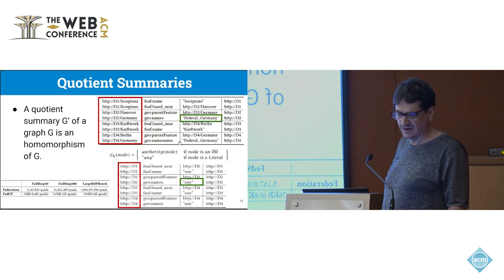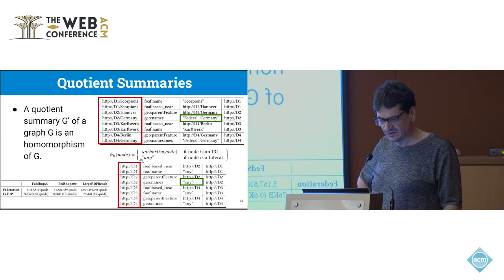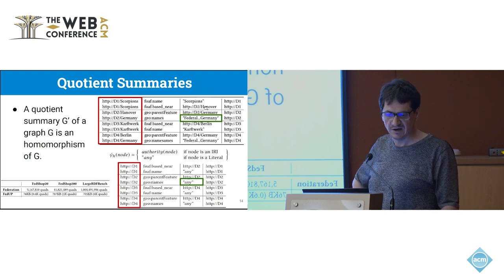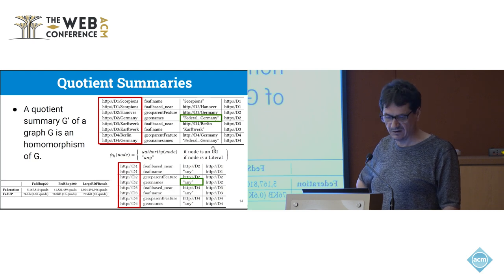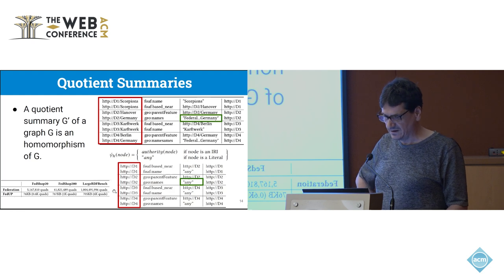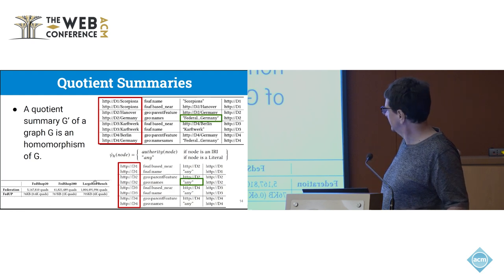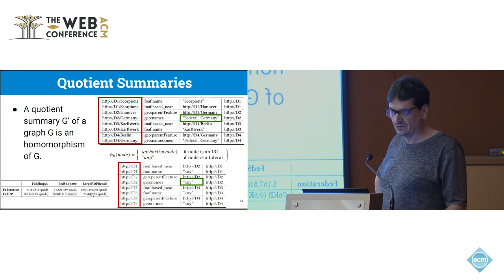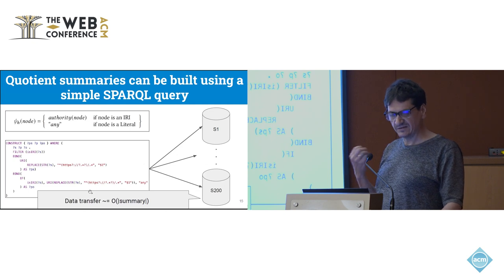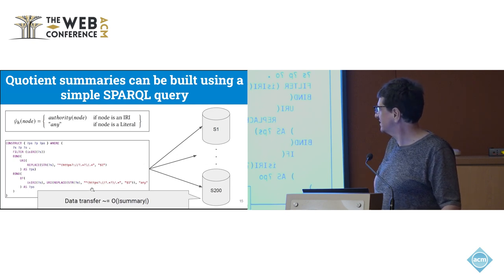I continue with my little example. My quotient summary is super simple. When I see a URI, I just keep the pay-level domain. So here for D1 Scorpion, I just keep D1. And each time I see a literal, I replace with 'any'. It's a super simple quotient summary. But it's super efficient because if you see the effect on LargeRDFBench, LargeRDFBench has more than one billion quads. When you apply this simple function, you just keep 6,000 quads. So it's super tiny.